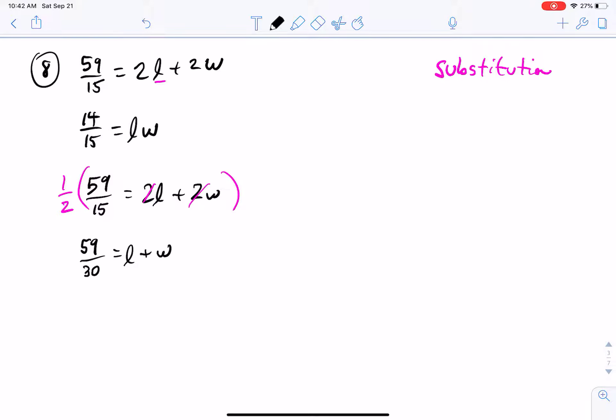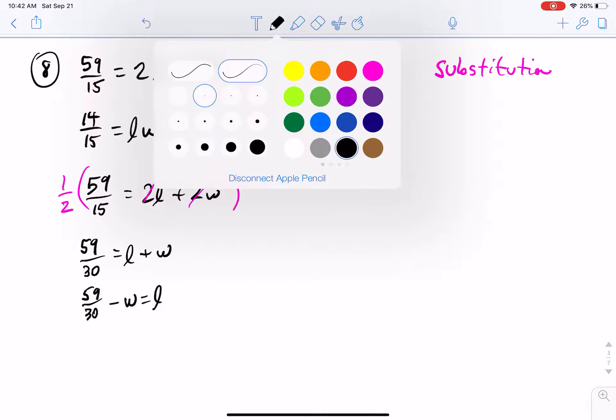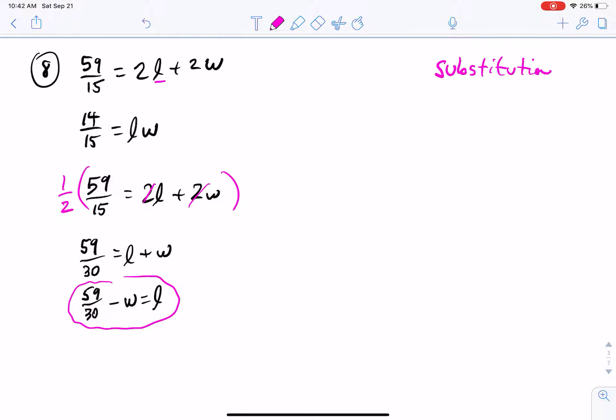And that's going to get rid of our 2s on the left-hand side, make our equation just a little bit simpler. And then multiplying on the left with these two fractions, 59 times 1, and then 2 times 15. Now, I think that we said that we're going to solve this for the length, so I just have to subtract over the width. So 59 over 30 minus the width is equal to the length. Now I have an expression that I could substitute in for the length in the other equation.